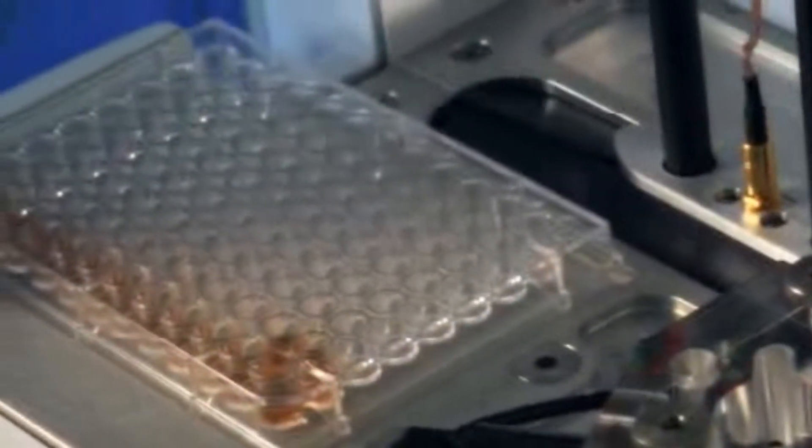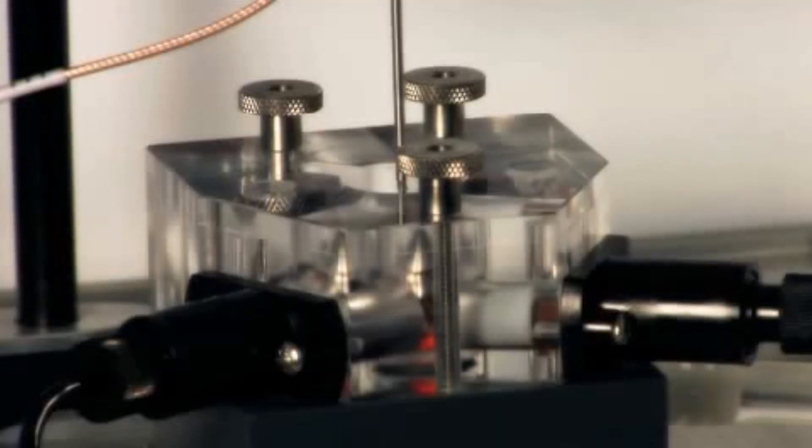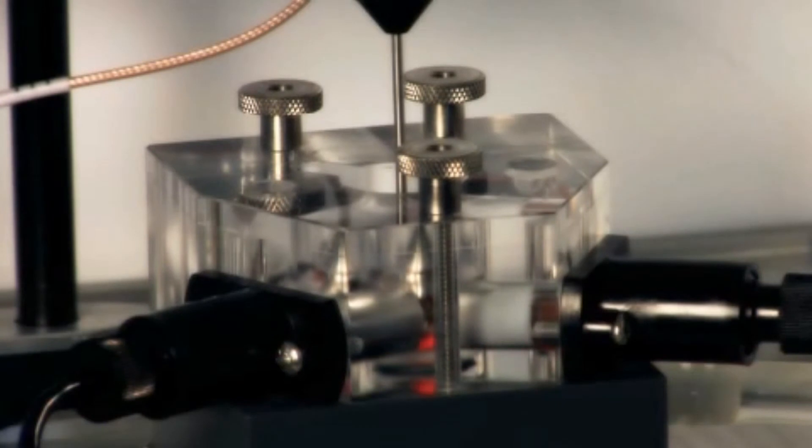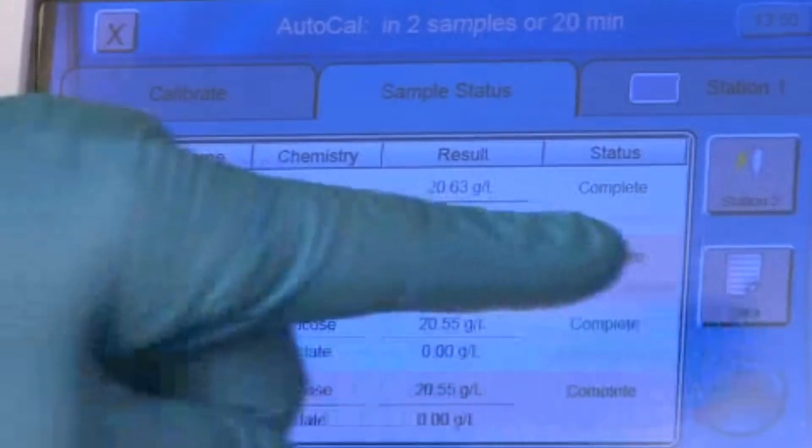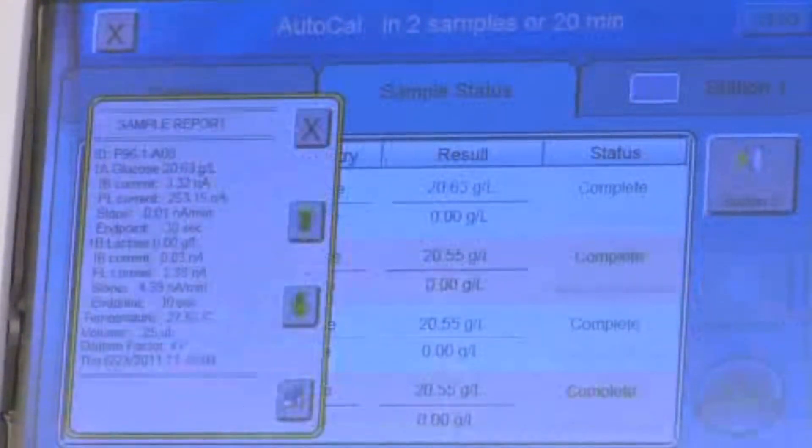The YSI 2900 then aspirates the selected sample volume, dispenses it into the chamber, allows a few seconds for the enzymes to react with the sample, and measures the resulting peroxide concentration with a Clark electrode. Immediately, the sample is removed, the chamber is flushed, and the rinsed injection tip returns for the next sample.